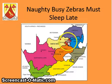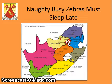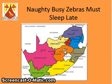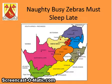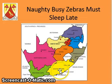Gauteng — our capital city is Johannesburg. In the Free State, our capital city is Bloemfontein. In KwaZulu-Natal, Pietermaritzburg is the capital city. And in the Eastern Cape, Bisho — okay, it's not on this map, but Bisho is the capital city.